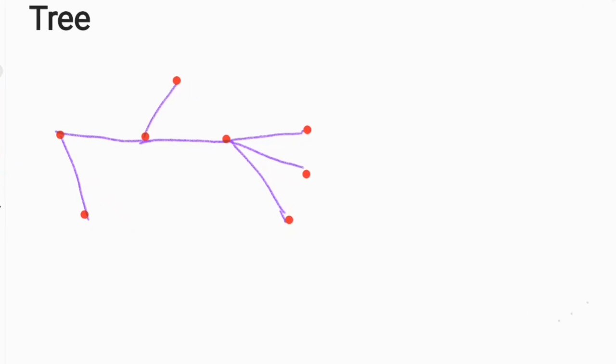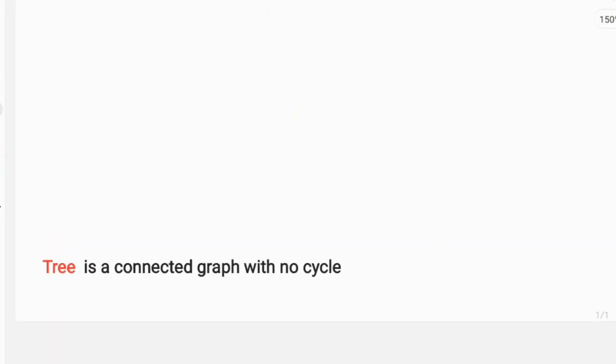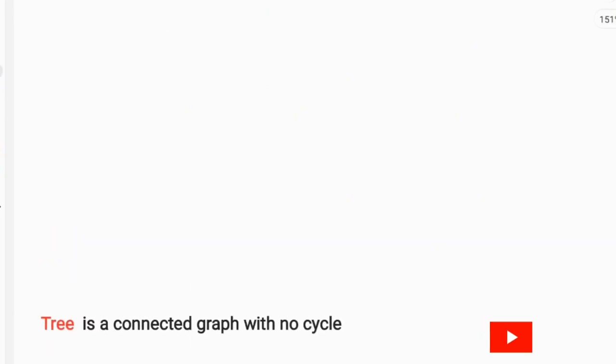This is graph theory of discrete mathematics. A tree is basically a connected graph with no cycle.